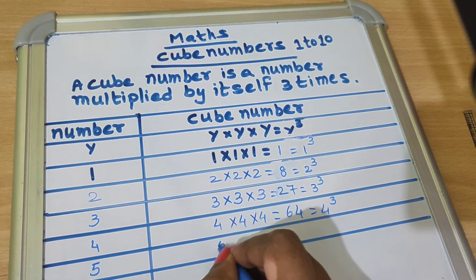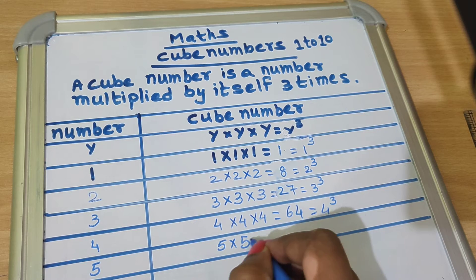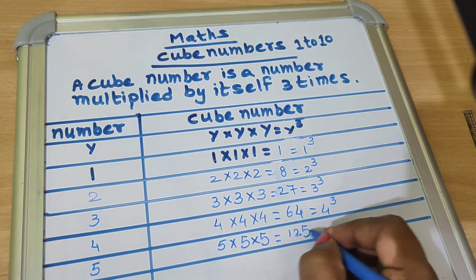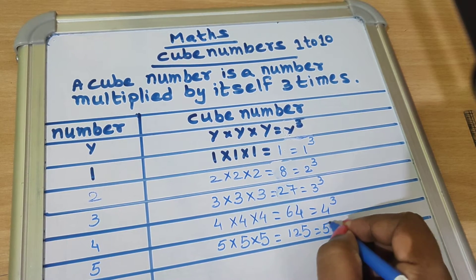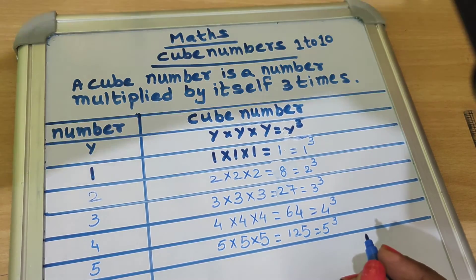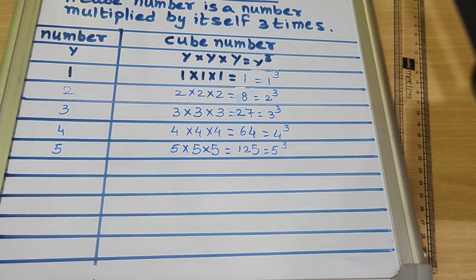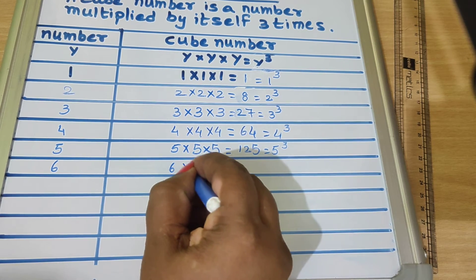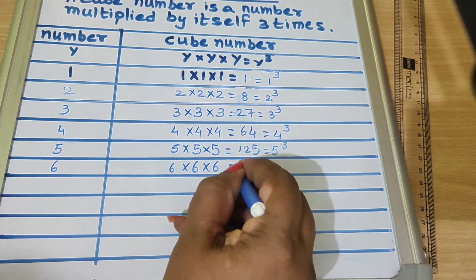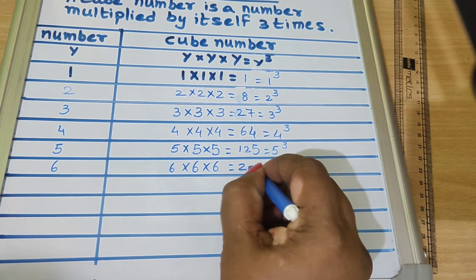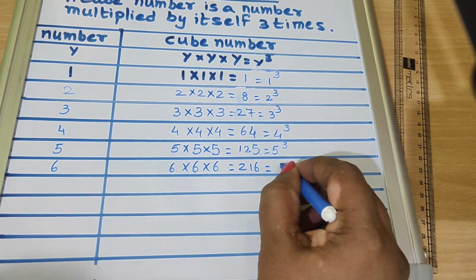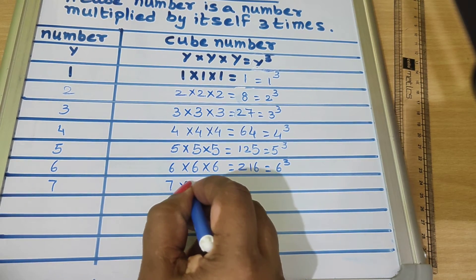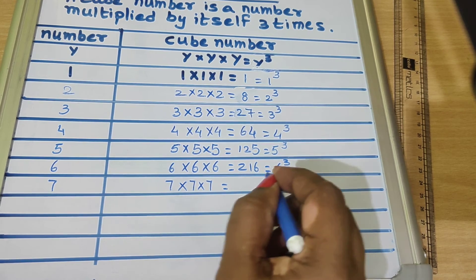5 into 5 into 5 equals 125, we write as 5 cube. Now, 6 into 6 into 6 equals 216, equal to 6 cube. 7 into 7 into 7 equals